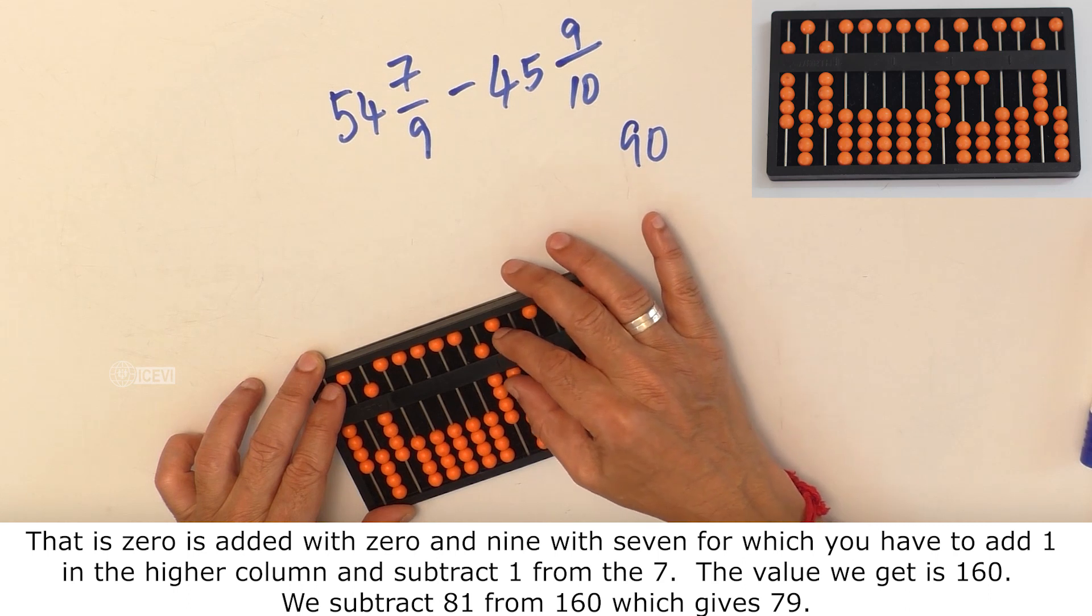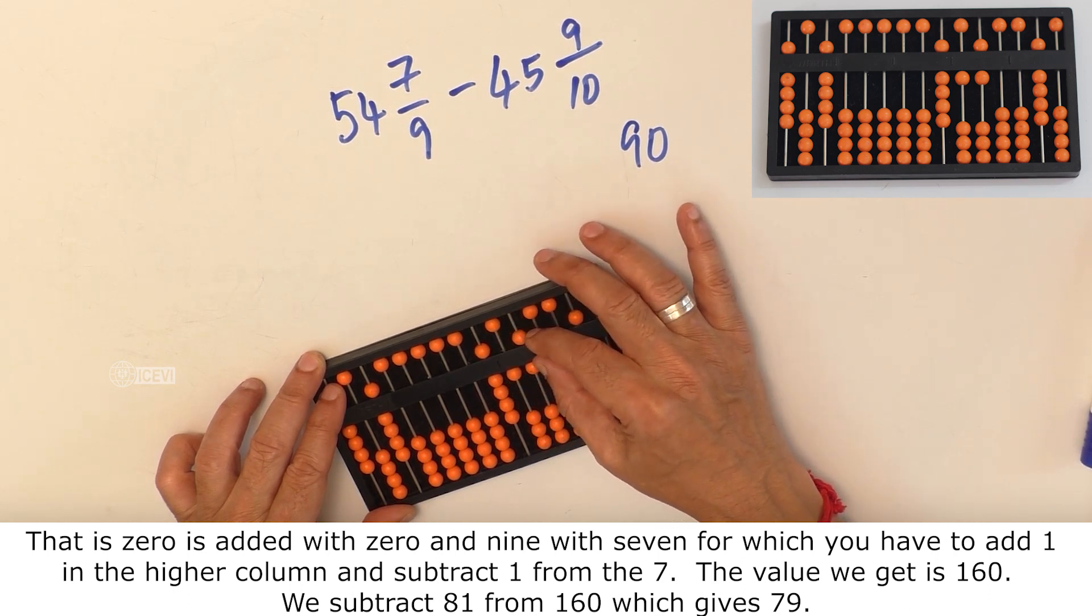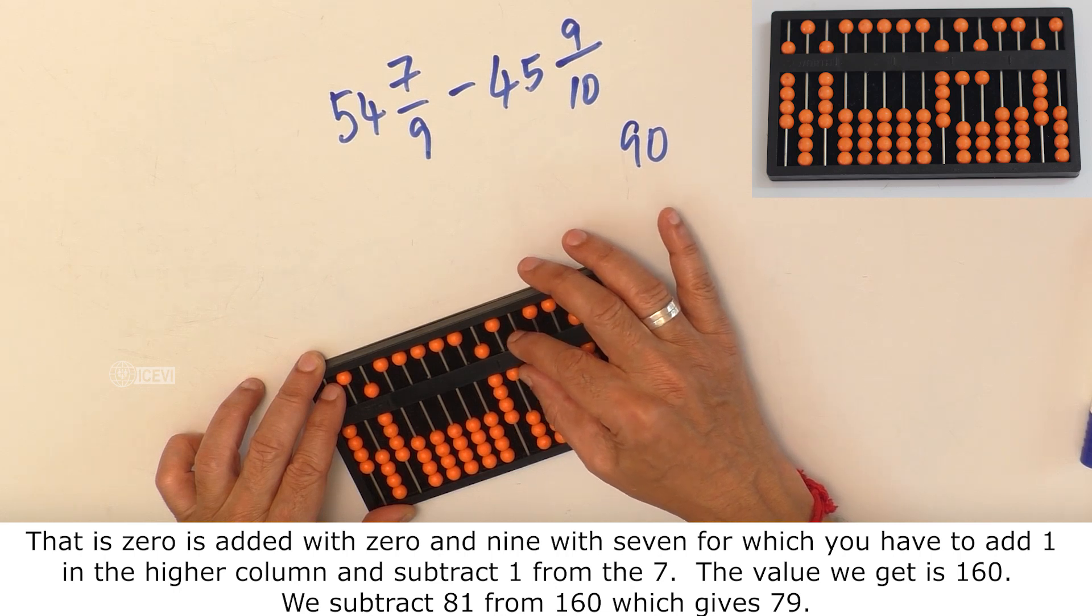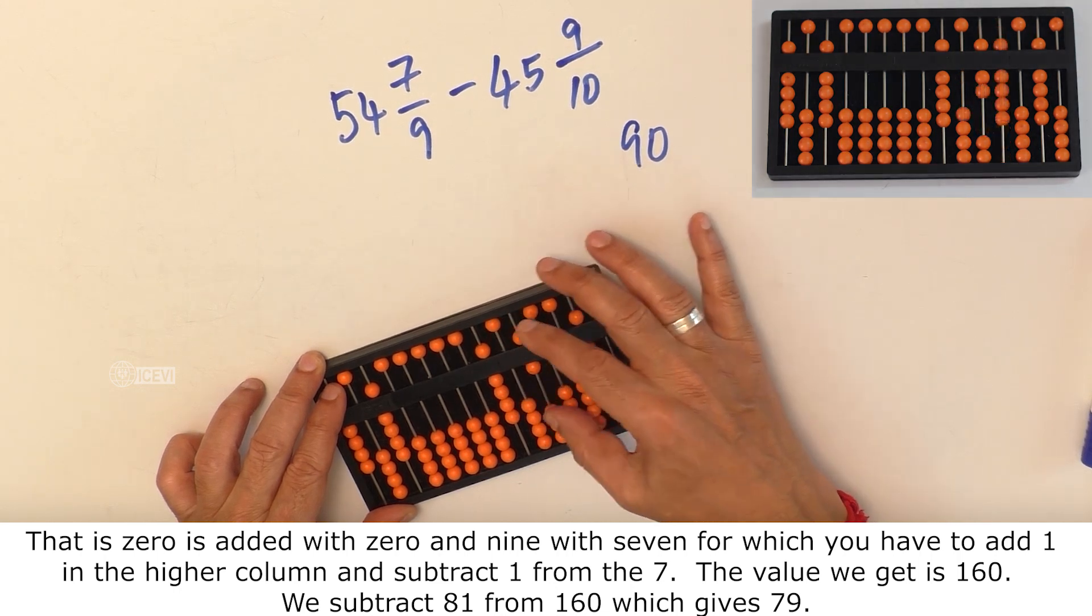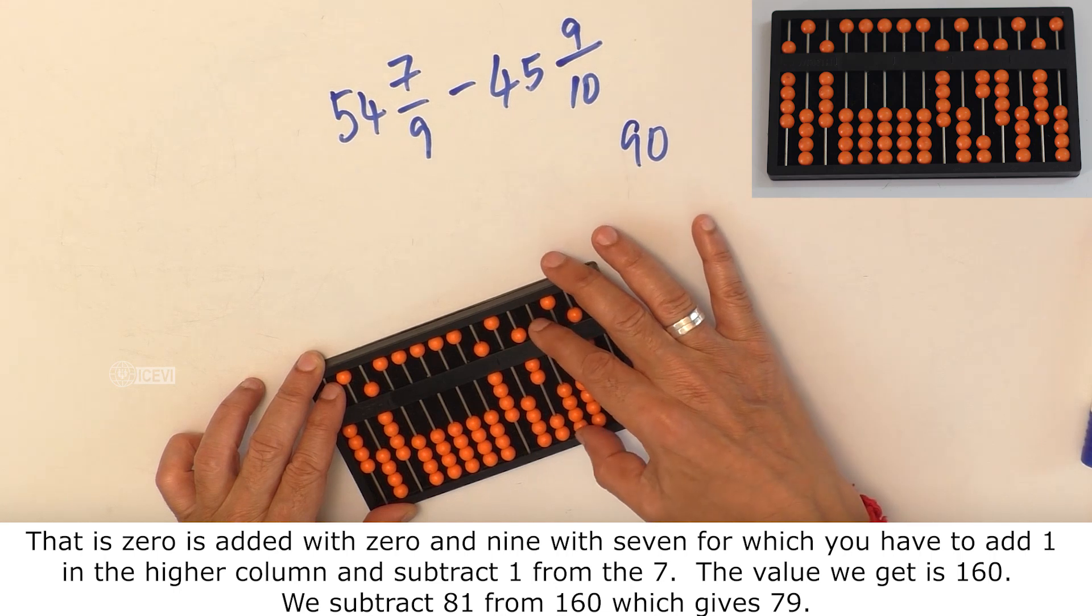The value you get is 160. Now we have to subtract 81 from 160. That gives you 79.